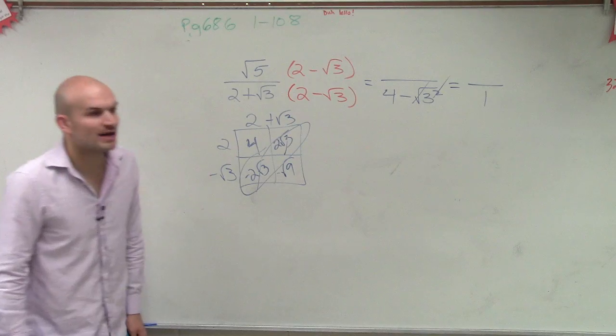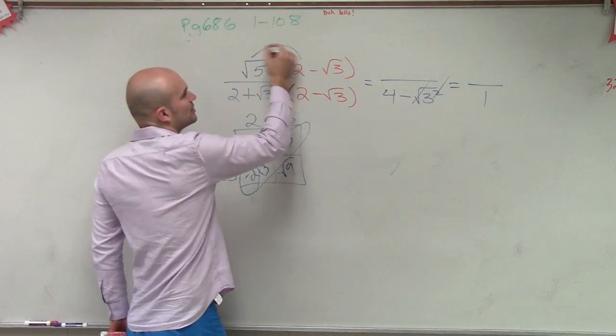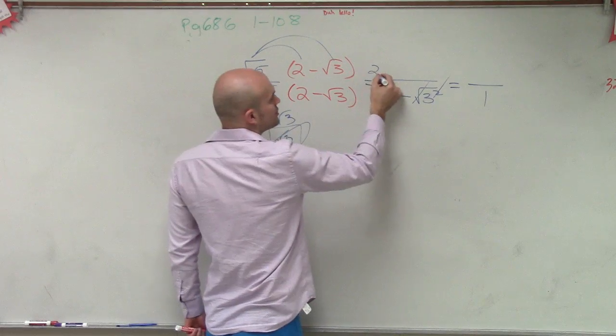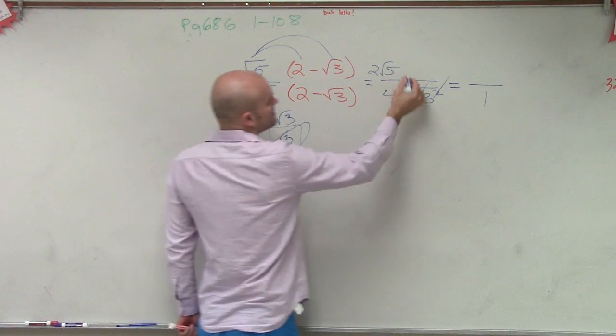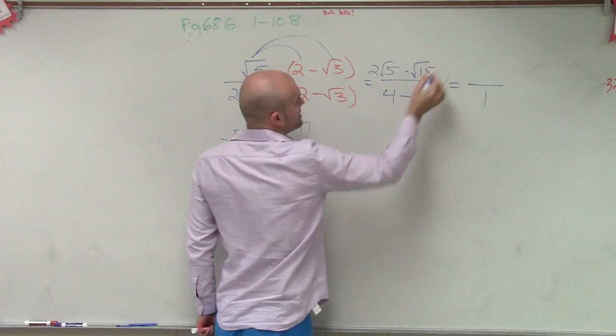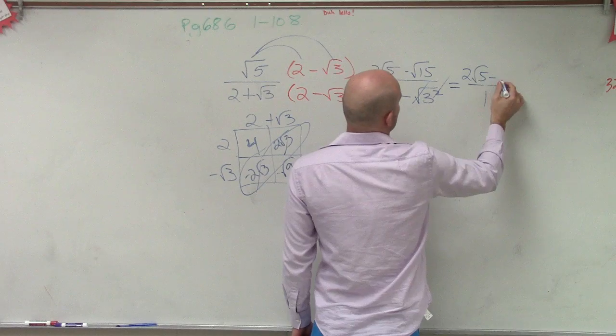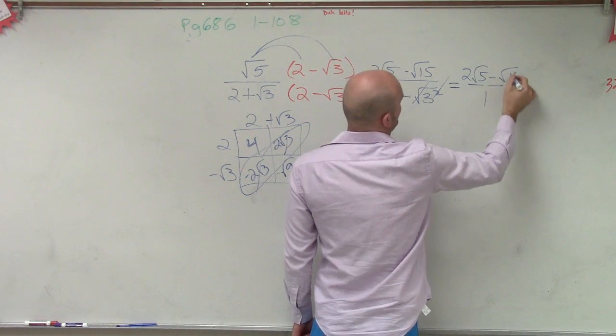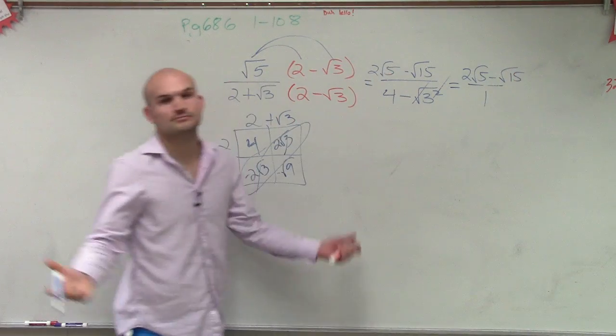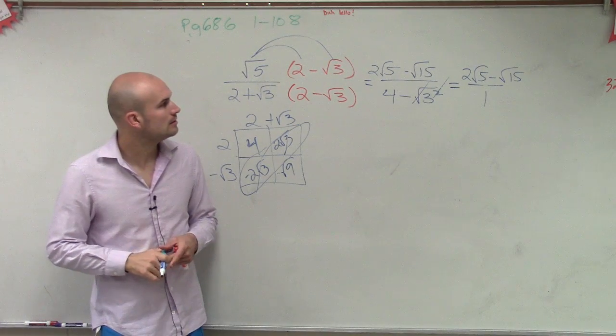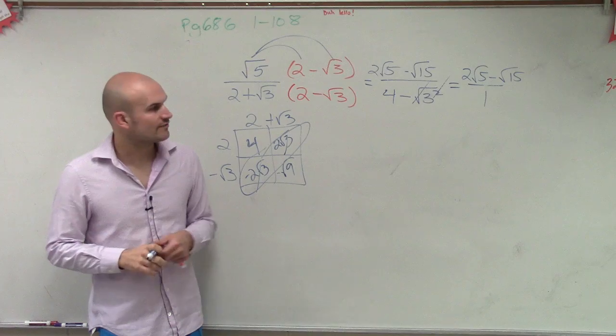Then I need to multiply the numerator. Well, this we're going to apply distributive property. Square root of 5 times 2 is 2 square root of 5. Square root of 5 times 3 is going to be negative square root of 15. Well, 2 square root of 5 minus square root of 15 over 1. Which would be just your final answer with that.